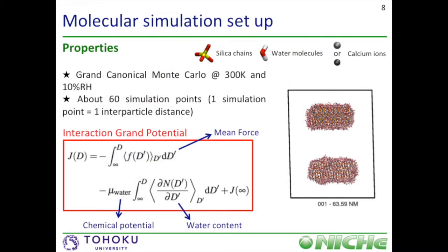We employ Grand Canonical Monte Carlo for our simulation at a temperature of 300 Kelvin and a relative humidity of 10%. With such technique, the particle pair is in an open system where the number of water molecules can fluctuate as a function of the inter-particle distance. We run about 60 simulation points for each configuration, one simulation point being a given distance among the particles. The location of particles is fixed in the course of one simulation point.